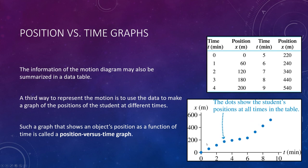So at t = 0, when she first started, she was at the origin — we put a dot there. After one minute she was at 60 meters, after two minutes at 120 meters, after three minutes at 180, after four minutes at 200, and so on. We have now constructed a position versus time graph — another way to represent this motion. It takes some time to draw the axes and plot each data point, but this graph gives us more information than either the table or the motion diagram.